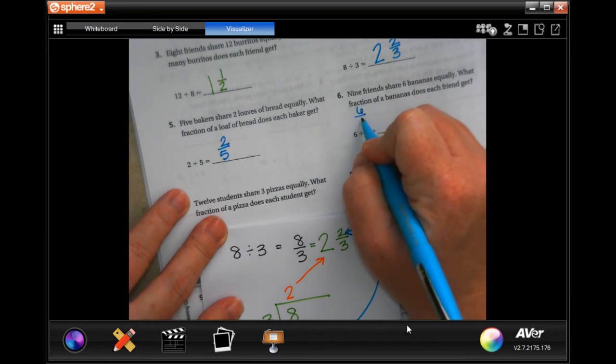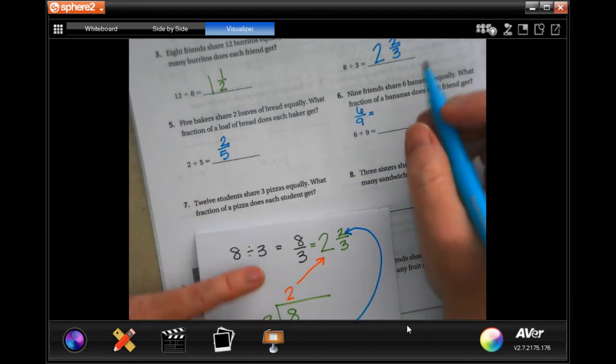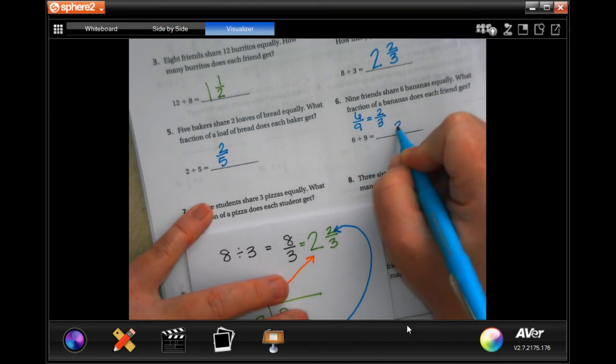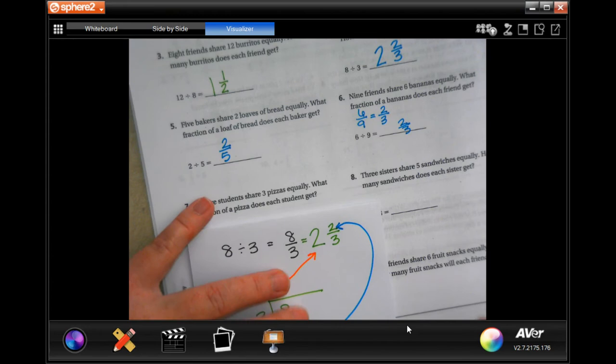Now this would be six over nine, but that can be reduced. Three goes into both of those, so three goes into six twice and three goes into nine three times. So your answer is two thirds.